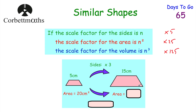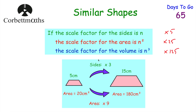Here we've got a trapezium and a larger trapezium — one is an enlargement of the other. As you can see the sides are three times larger: the parallel side is 5 on the small one and 15 on the large one, so it's three times bigger. To find the area of the bigger one, since the sides are 3 times bigger we square that: 3 squared is 9, so the area of the bigger trapezium is 9 times larger. The area of the smaller one is 20, and 20 × 9 = 180, so the area of the larger trapezium is 180 cm².